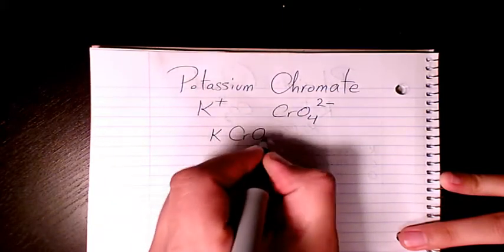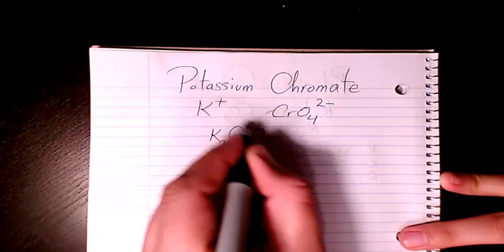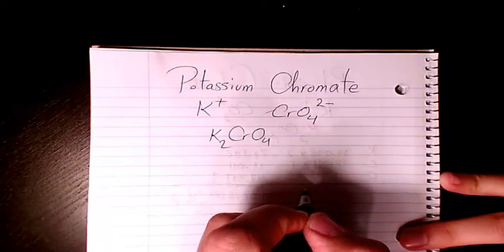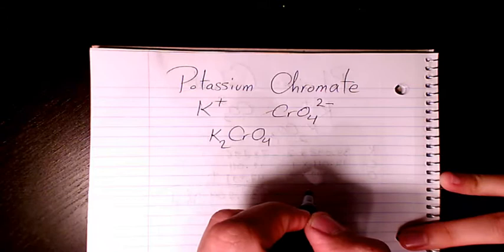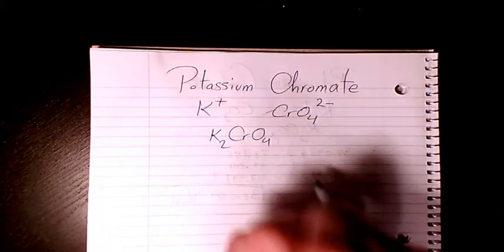So if I want to show it as a compound, the two is gonna sit here, one is gonna sit here, but we don't show that. It's gonna be K2CrO4, that's potassium chromate. Now I want to find out the molar mass.